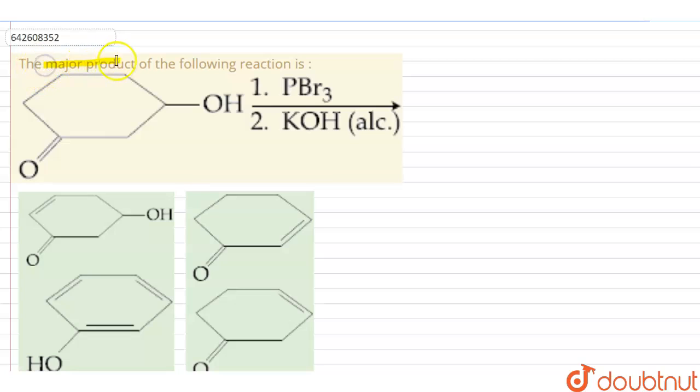The major product of the following reaction is: We have a cyclohexane ring, on one particular position you have a C=O group, whereas with respect to the C=O position, on the third position we are having an OH group located.